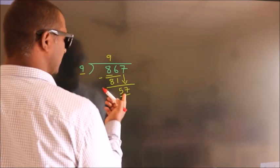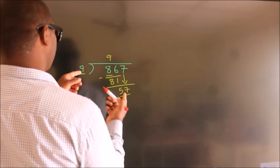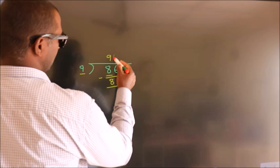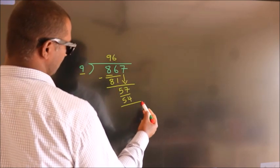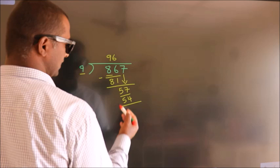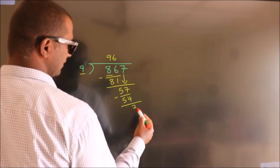A number close to 57 in the 9 table is 9 times 6 equals 54. Now we subtract, we get 3.